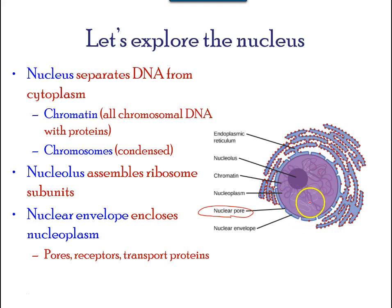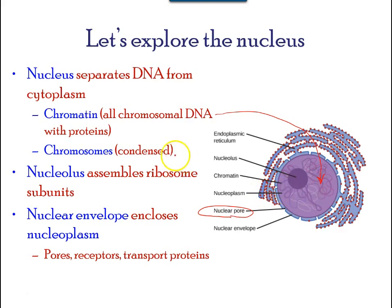This combination of DNA and proteins is called chromatin. They look like thin fibers, but at the time of cell division they condense into chromosomes, composed of DNA — the hereditary material — and proteins. A darkly staining area within the nucleus is called the nucleolus, plural nucleoli.